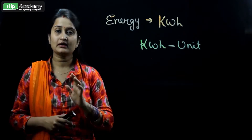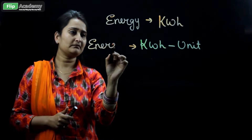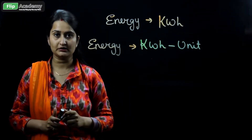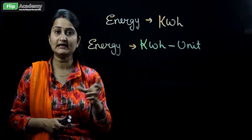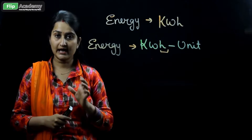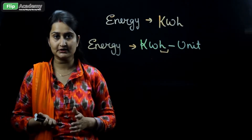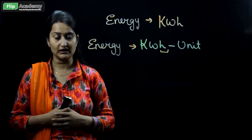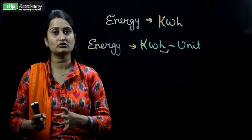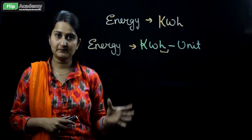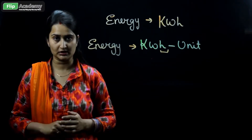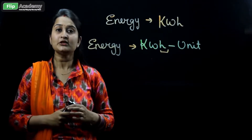Unit represents energy because kilowatt hour represents energy, so energy is represented in the electricity bill as units. The unit is defined as the electricity consumed by an electric appliance over a time period measured in hours. Heavy appliances like AC, fridge, and geysers use large amounts of energy, so the unit is also large. Lighter appliances like bulbs and fans consume smaller amounts of energy, so the unit is also small.